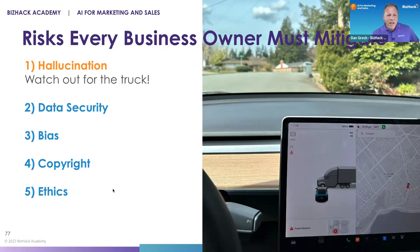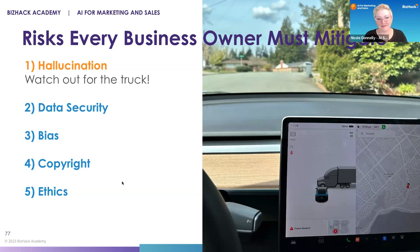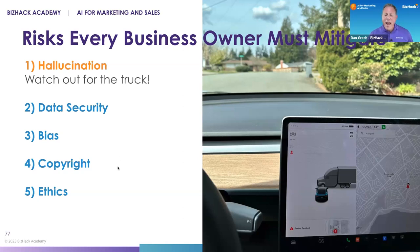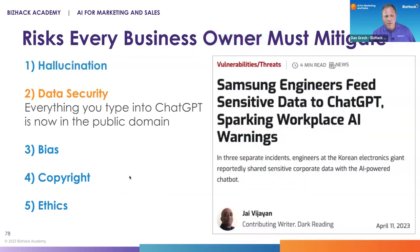Basically, AI makes stuff up — that's what hallucination means. So you need to learn how to fact-check it. We're going to talk about fact-checking as a discipline and how journalists do it, so that you can do it like a journalist, because you've got to fact-check what the AI gives you.